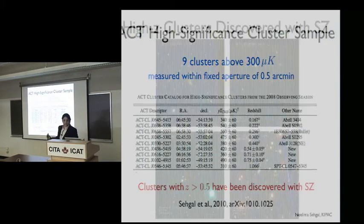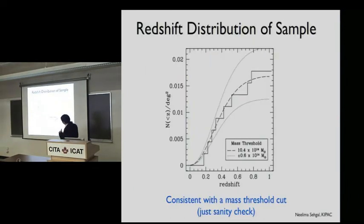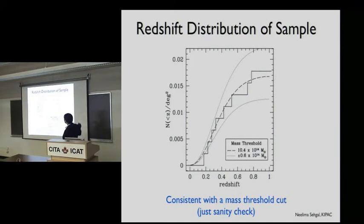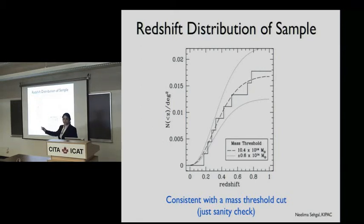We need spectroscopic redshifts for everything. Here is the redshift distribution of the high-significance sample. The step function is the data, and the dashed line is what you'd expect if you had a clean mass cutoff assuming Lambda CDM — the number of clusters as a function of redshift. The purpose of this plot is not for cosmological analysis, but to check that our redshift distribution makes rough sense: we're not finding all clusters at z=0.2. It gives an indication that the SZ effect is roughly a mass cut.